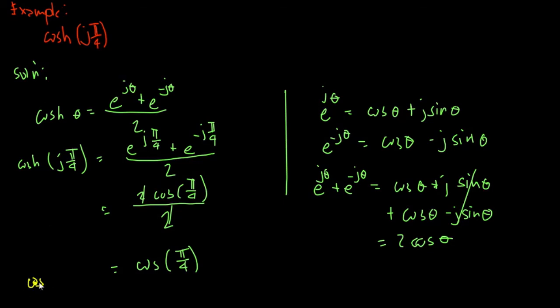So the hyperbolic cosine of j·π/4 is equal to 0.707, and this will be our answer. That concludes our first example for the functions of complex numbers — the trigonometric, exponential, and hyperbolic functions. Thank you for watching this video, and as always, keep on studying.